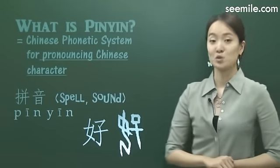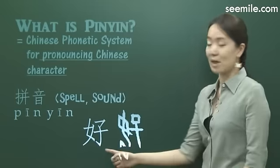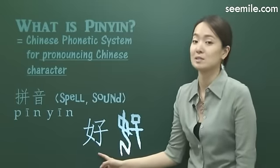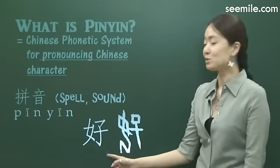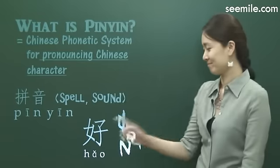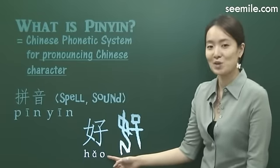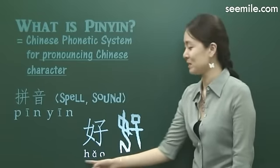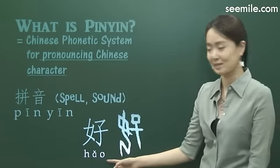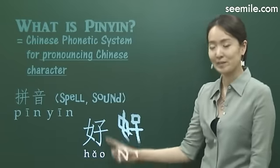But basically, Chinese characters are mute — it means you don't have any clue how to pronounce them. That's why you need pinyin. Now you know how to pronounce this character with pinyin — it's 'hǎo,' right?